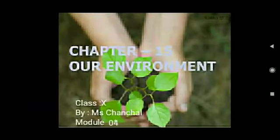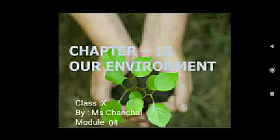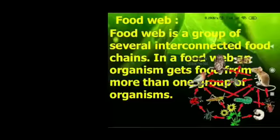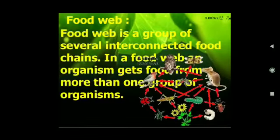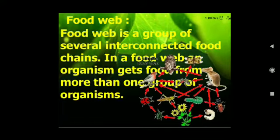Good morning everyone. Today we are on Module 4 of Chapter 15, Our Environment. Today we are going to learn about food webs. A food web is a group of several interconnected food chains. In a food web, organisms get food from more than one group of organisms.